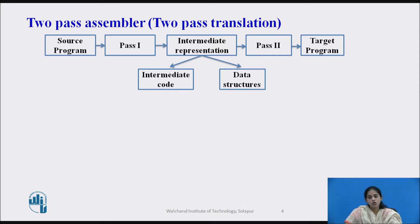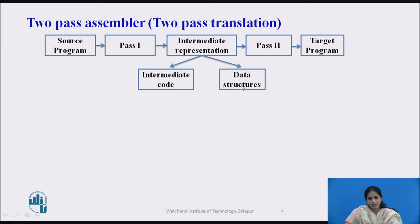Now we see the two-pass assembler, also called two-pass translation. The source program is given as input to pass one. Pass one generates the intermediate representation, consisting of two components: intermediate code and data structure. That is given as input to pass two, and pass two generates the target program.